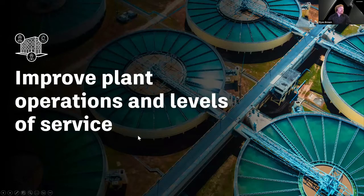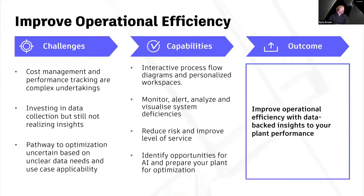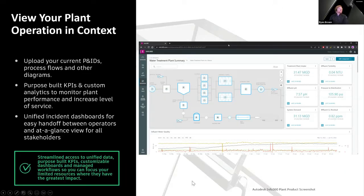Improving plant operations and levels of service: this is the idea of tracking different performance metrics, looking at what's happening over time, and testing different scenarios to come up with an optimized plan. That's where the AI and machine learning comes in to enhance those processes and understand how the system can be improved. The ultimate goal is to reduce the risk associated with operating these plants, improve level of service, and monitor things efficiently. It's a process of bringing in current data, process flow diagrams, building KPIs with custom analytics, and increasing the level of service.